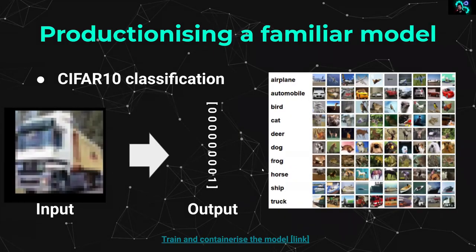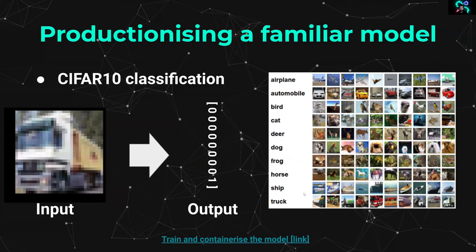Let's start with a familiar model — the Hello World of machine learning, the CIFAR-10 classifier. What we have here is basically a model that takes an image and is able to predict what class this image is. In this case, this is the image of a truck, and it's predicting class number nine, which would be the image of a truck.